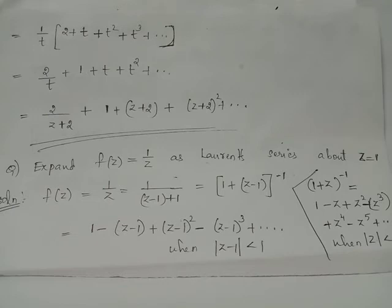Multiplying 1 over t inside the square brackets, we obtain 2 over t plus 1 plus t plus t squared plus etc.